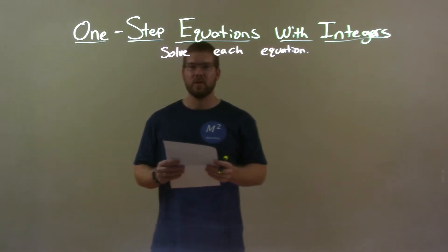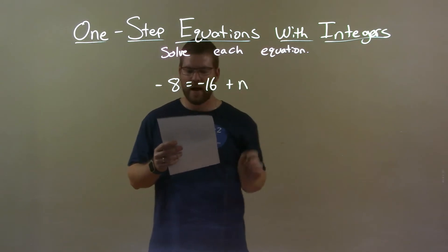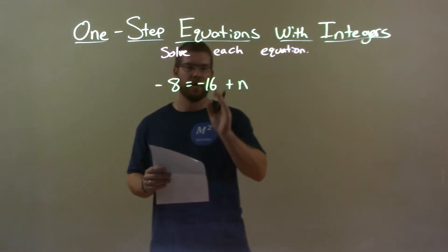If I was given this equation, negative 8 equals negative 16 plus n, I want to get n by itself. Now we have a negative 16 there on the right.